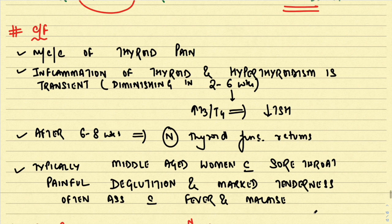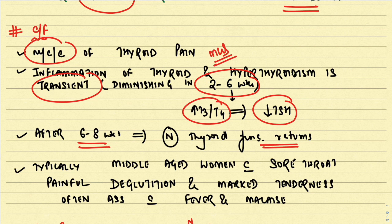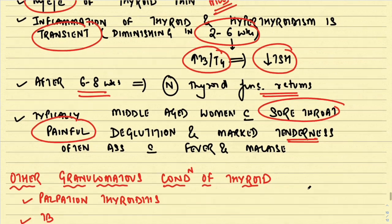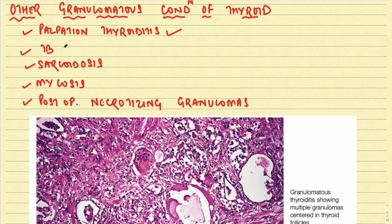Clinical features of granulomatous thyroiditis: it is the most common cause of thyroid pain — an important MCQ. Inflammation and hyperthyroidism are transient, diminishing within 2–6 weeks, with increased T3/T4 and decreased TSH. After 6–8 weeks, thyroid function tests return to normal. It typically affects middle-aged women with a history of sore throat, painful swallowing, marked tenderness, fever, and malaise. Other granulomatous conditions of the thyroid include palpation thyroiditis, tuberculosis, sarcoidosis, mycosis, and post-operative necrotizing granulomas.